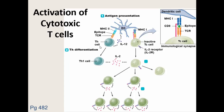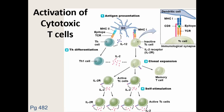If it also has MHC1 — which all nucleated cells do — this is where we start to activate the cytotoxic T cell. Once activated, once it sees this MHC1 antigen, it will bind to it, get activated, and start to make more of itself — more activated cytotoxic cells. One of the activated cytotoxic cells can become a memory cell. So we start to get memory cells during this clonal expansion. If it doesn't become a memory T cell, it constantly makes more and more of itself — that's called self-stimulation.